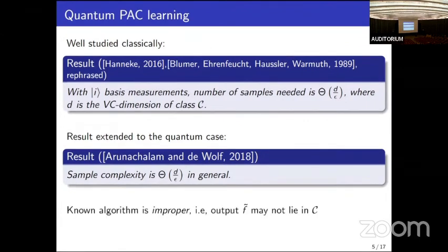There is one peculiar thing about the algorithm giving the upper bound here. The known algorithm is improper — it might output an f-tilde that does not belong to the same function class. This is bizarre because the algorithm uses the fact that f belongs to some function class to perform better, yet still outputs an f-tilde that it knows can never actually be the same as f.